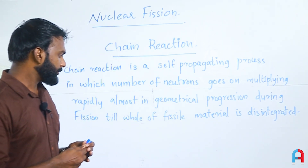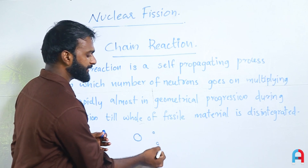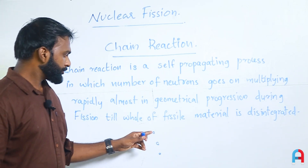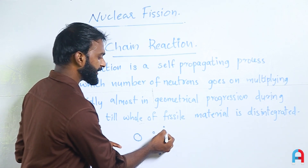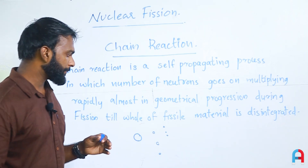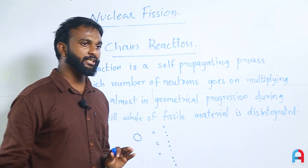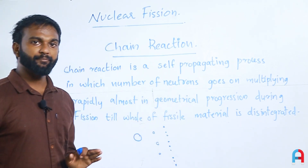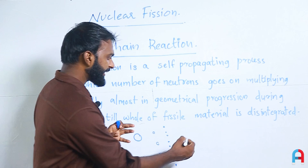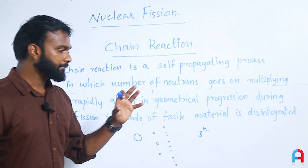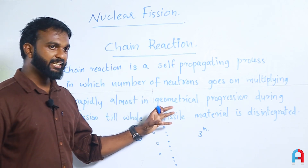In nuclear fission, suppose one neutron causes fission releasing 3 neutrons. Those 3 neutrons cause further fissions. At step 1 we have 3 neutrons, at step 2 we have 9, at step 3 we have 27, and so on — following a 3^n pattern. This process is very rapid and very dangerous.